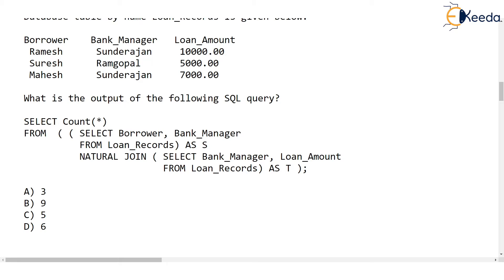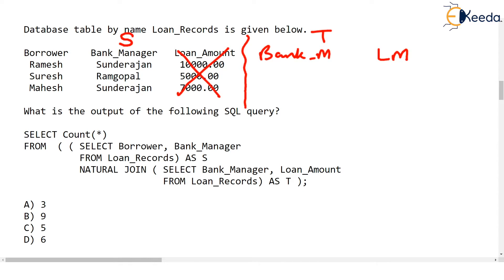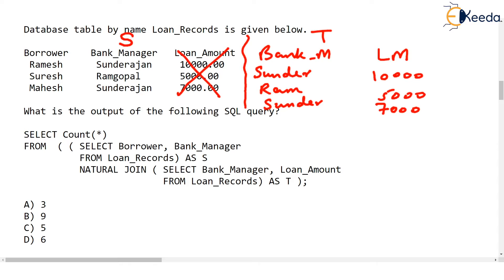Let's see what the result of the natural join will be. The first select — table S — has borrower and bank manager, not loan amount. The second select — table T — has bank manager (BM) and loan amount (LA). The bank managers in T are: Sundar Rajan with loan amount 10,000; Ram Gopal with 5,000; and Sundar Rajan again with 7,000. These are the two inner-query tables, and now we do their natural join.